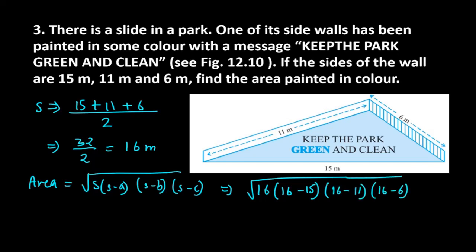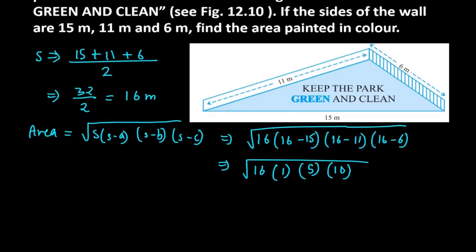Now you have to reduce all the values. So it will give you 16. 16 minus 15 is 1, 16 minus 11 is 5, 16 minus 6 is 10. Now reduce the values and find the area.